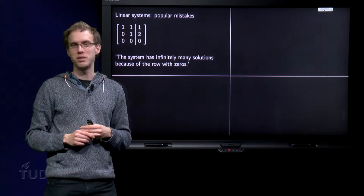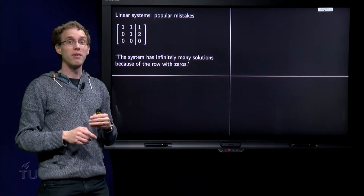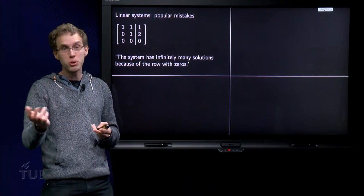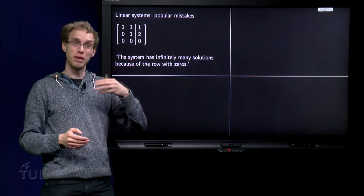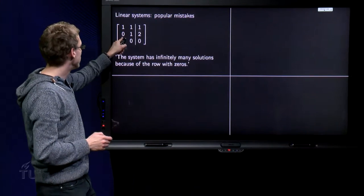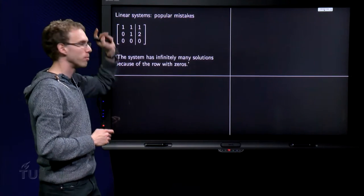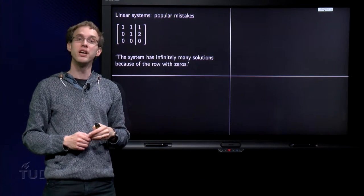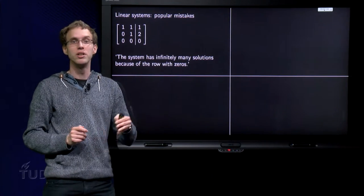How many solutions does the system have? Well, we have no inconsistencies. We also have two variables, two equations, so no free variables, so in fact the system has only one solution. Well, what solution? You can see it. 0x1 plus 1 times x2 equals 2, so x2 equals 2, and from the first row you can deduce that x1 equals minus 1. So in fact here you have only one solution, so be careful.